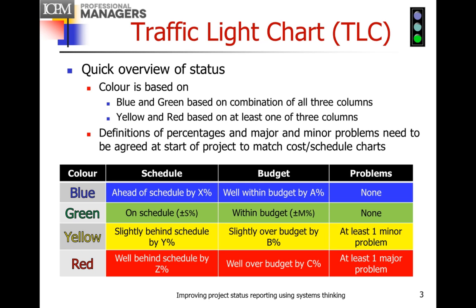The way you set the colors: for a project to be blue or green, all three conditions have to exist. But for a project to be yellow or red, only one of them has to be present. The definitions of percentages and what constitutes a major or minor problem need to be agreed to at the start of the project, and that information has to match what's in your regular cost and schedule charts.